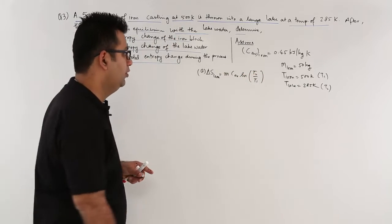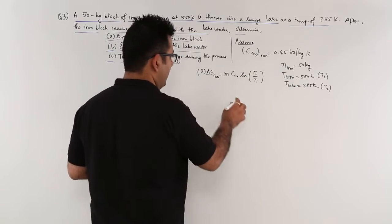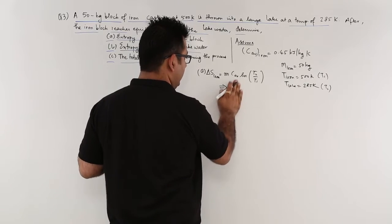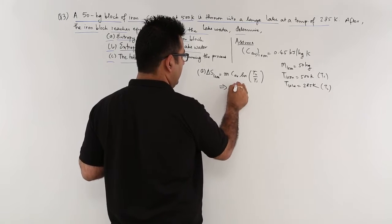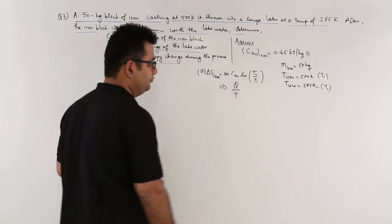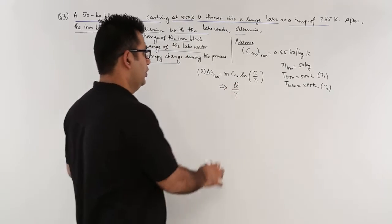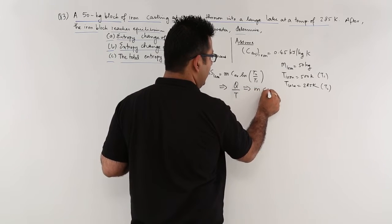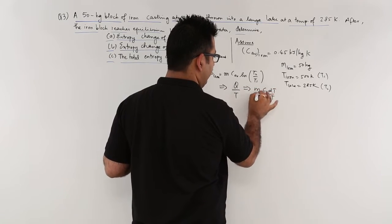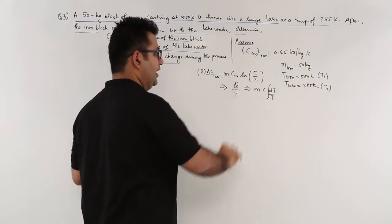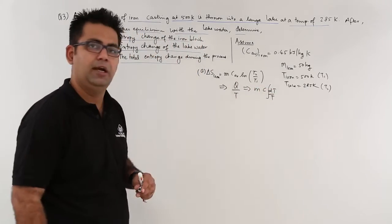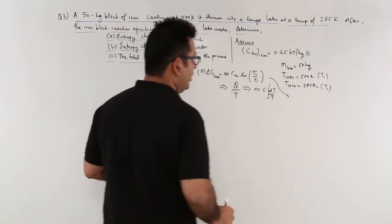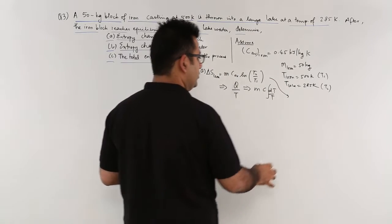How did we get that formula? This is nothing but Q upon T. What is Q? Q is MC dT. If you integrate this, you get MC log T2 by T1. So let's continue with the calculation.